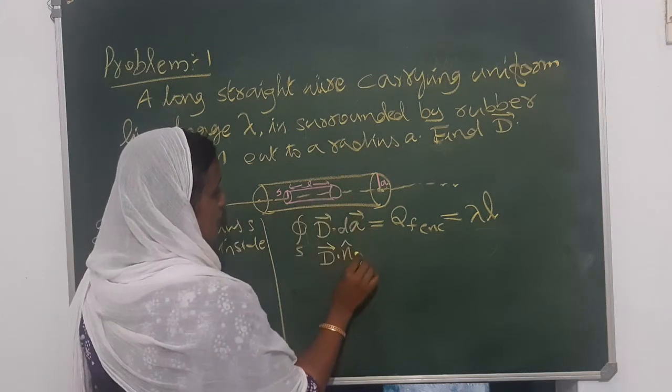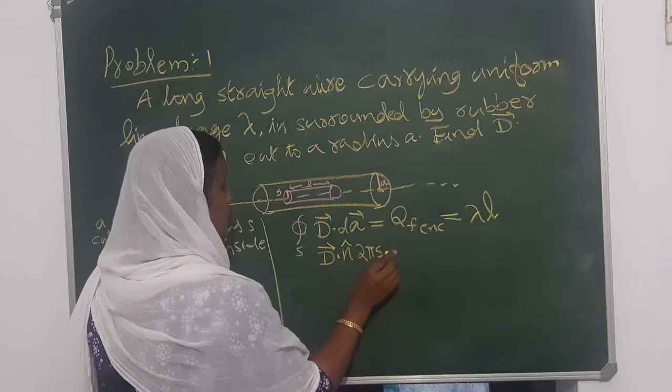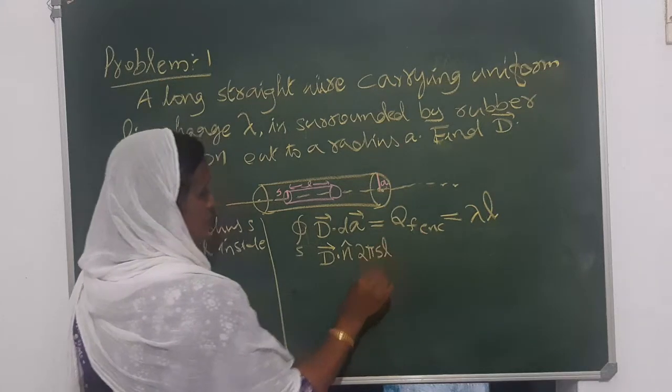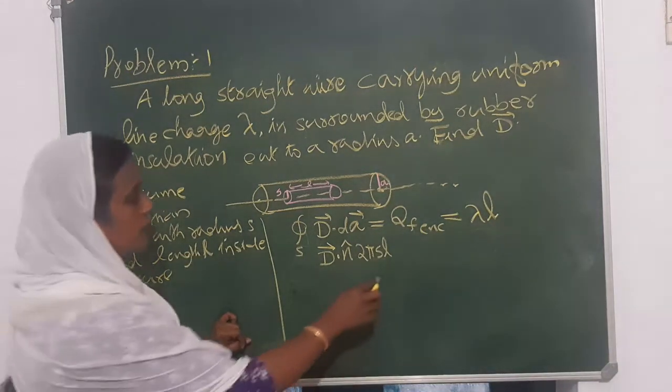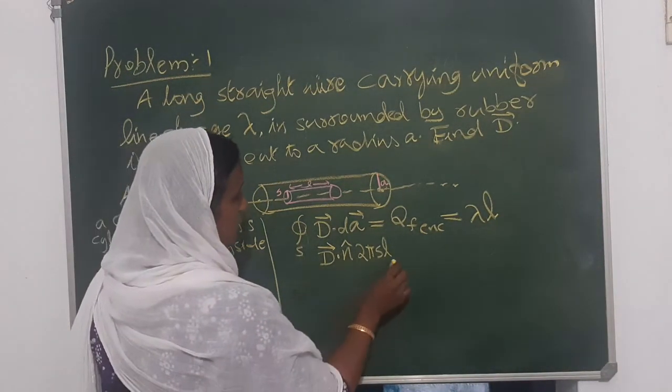The surface area is given by 2 pi S L. This is the area.